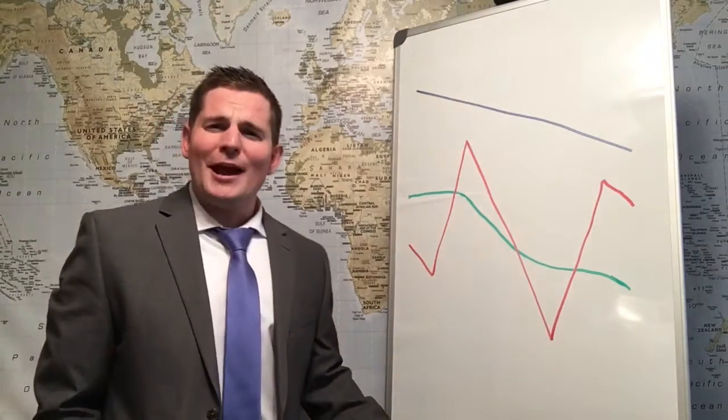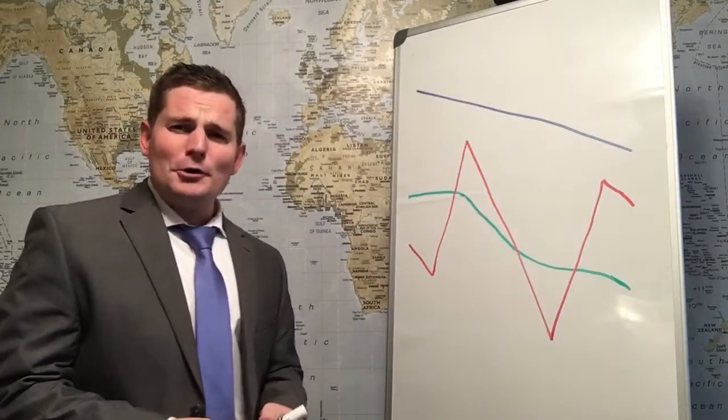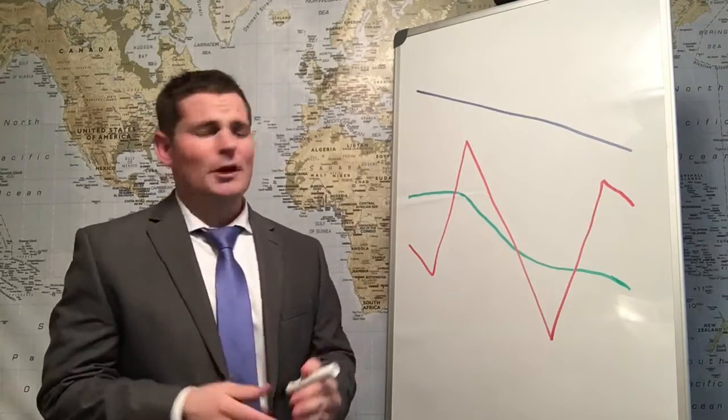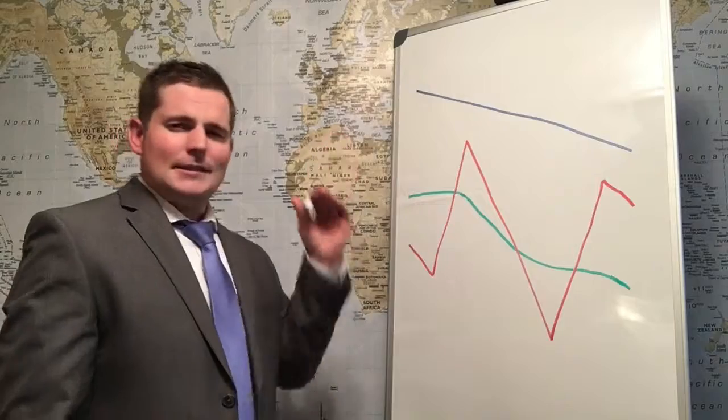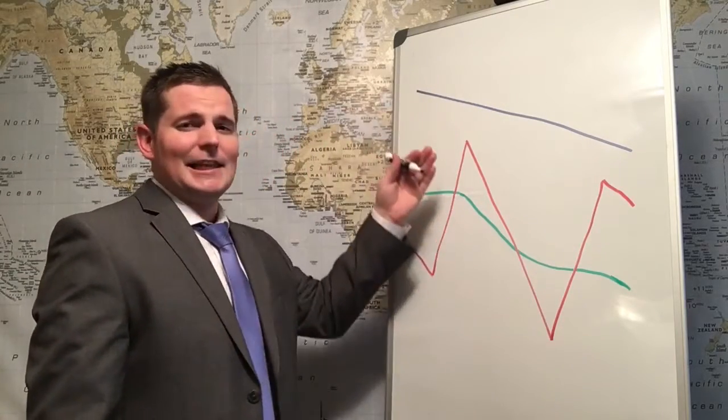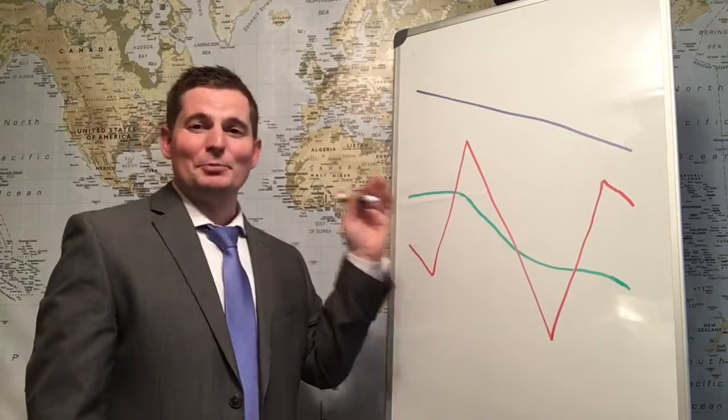Usually in a bear rally, you look at the longer-term moving average—maybe it's a 50-day moving average if you're a swing trader—and it's declining. So you have a longer-term moving average that's declining, represented by this blue line here.